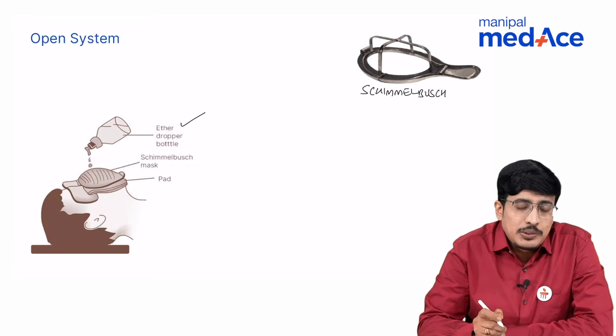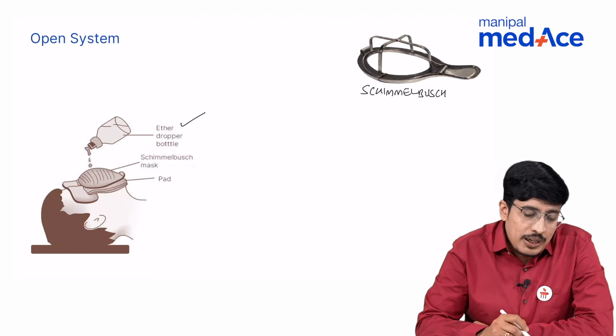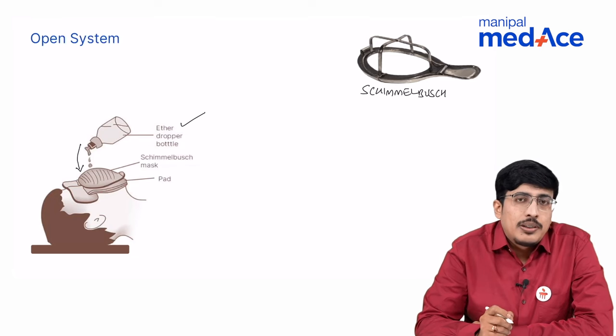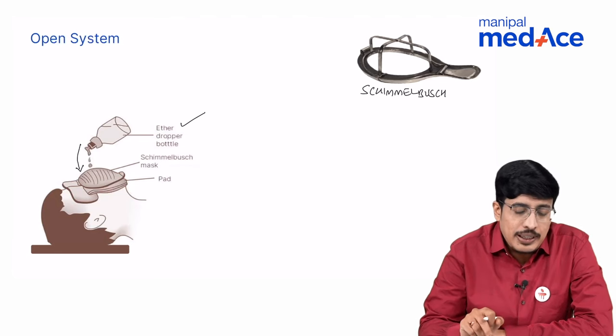Originally they used to cover patients mouth and nose with cloth and the Schimmelbush mask was placed on top and the ether or the chloroform was dropped from top. The vapors of the gas would seep in and the patient would get anesthetized when he breathes those anesthetic vapors. This is now outdated and no more used.